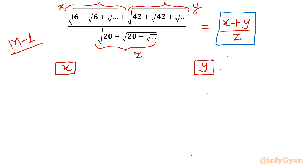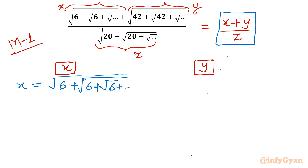So x will be square root of 6 plus square root of 6 plus square root of 6 and so on. Consider squaring both sides: x squared equals 6 plus x. Taking all terms to one side gives x squared minus x minus 6 equals 0.